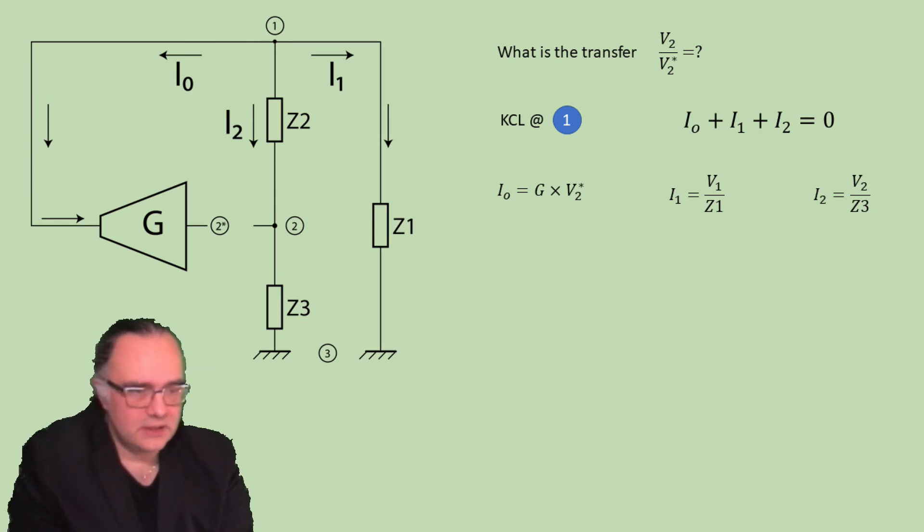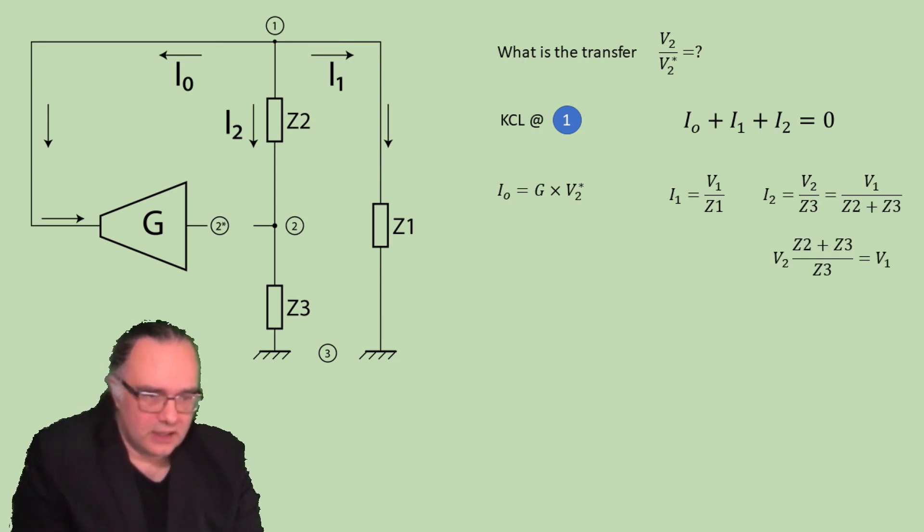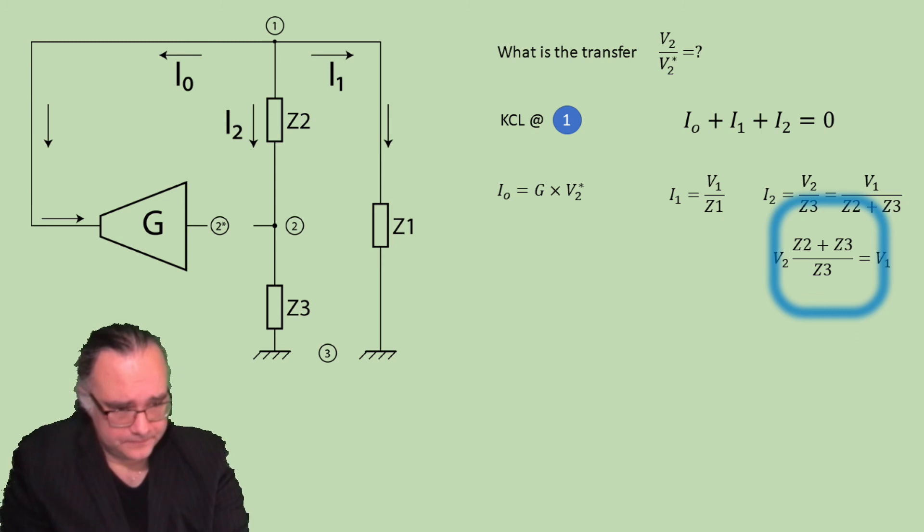Now we want to eliminate V1 because we want to have expression of only V2. So eliminating V1 can be done through the impedances Z2 and Z3. We recognize that the same current I2 flows through both impedances. Now this means that I2 can also be expressed as the voltage V1 divided by the impedance to ground which is Z2 plus Z3. So V2 divided by Z3 is equal to V1 divided by Z2 plus Z3. From here you can express V1 to be V2 times Z2 plus Z3 divided by Z3.